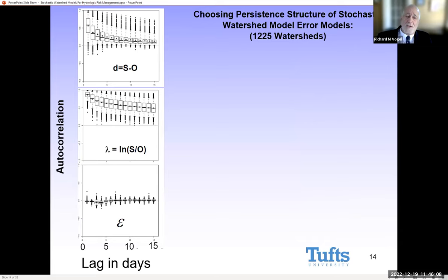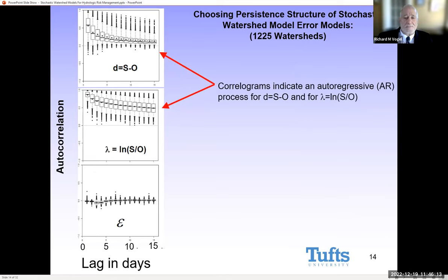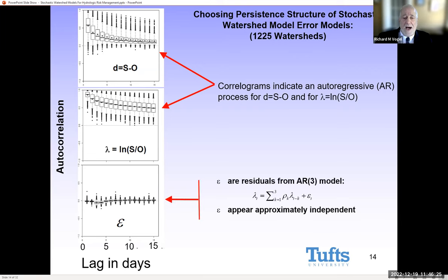Next, we look at persistence. The plots here are correlograms showing autocorrelation. For both the real-space difference residuals D and the log-space residuals, you see an autoregressive process. When we fit an AR(3) model to each of those river basins — again, these are box plots based on the 1,225 sites — we find that we can remove nearly all of the persistence. We have a very elegant and simple autoregressive model that appears to be very general and to work broadly.